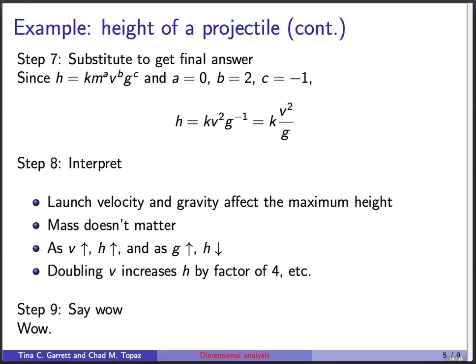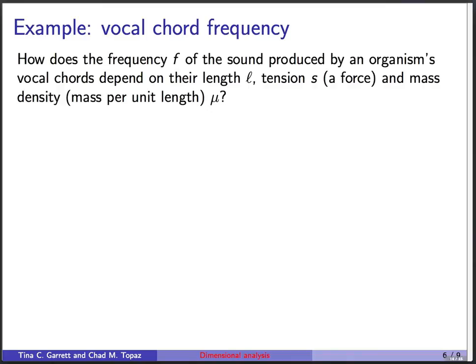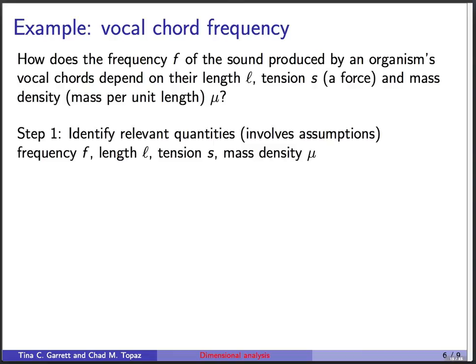And I find it so amazing that I actually want to do a second example with you. And this is about vocal cord frequency. So here's the basic setup, imagine that there's an organism's vocal cords, and you imagine them like it's a string. So they're like a one-dimensional object, they're aligned. And we want to know how the frequency of the sound that's produced by an organism's vocal cords depends on their length L, their tension S, and tension is a force, and then their mass density. Now usually density means mass per volume, but this is, since this is a one-dimensional object, it means how much mass is contained in a unit length. How much mass is contained in a unit length? That mass per unit length is called the mass density, and we're going to call it the Greek letter mu. So that's the problem. Step one, identify the relevant quantities. This is always an assumption, but we're just going to use the information I've told you. There's the frequency f, the length L, the tension s, which is a force, and the mass density mu, which is a mass per unit length.